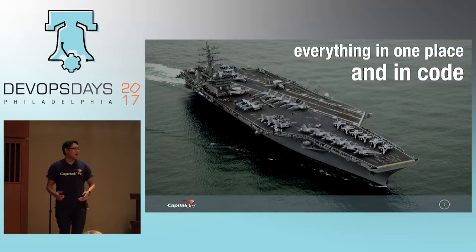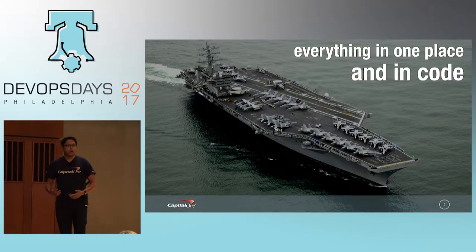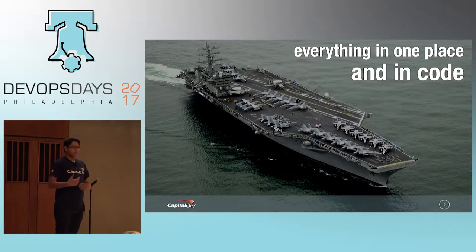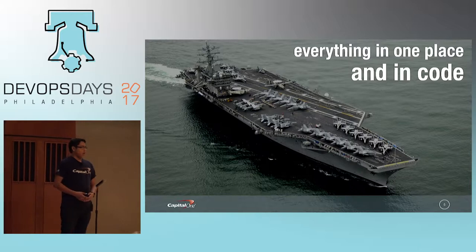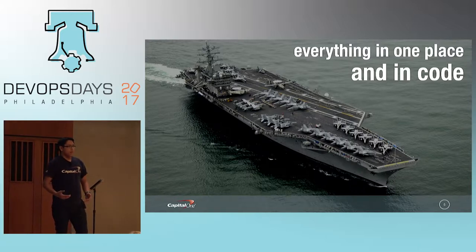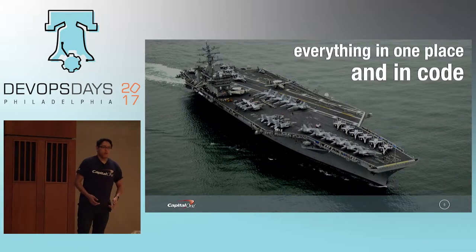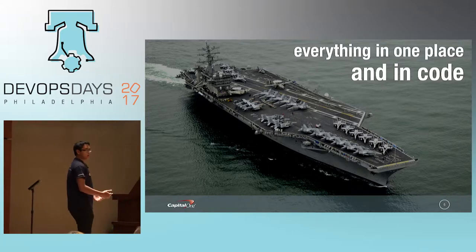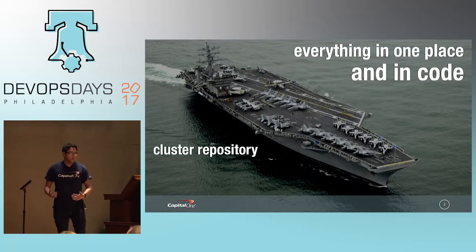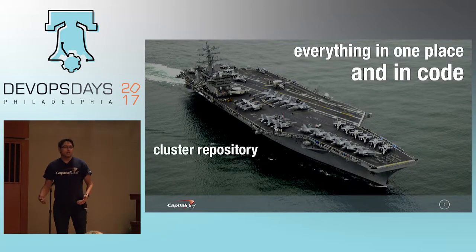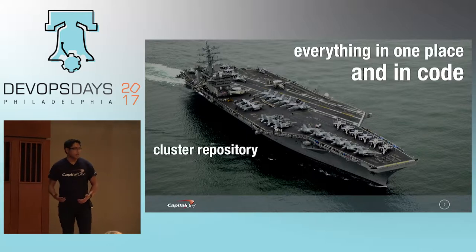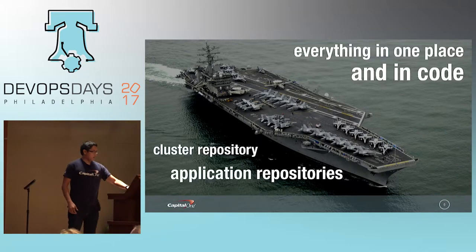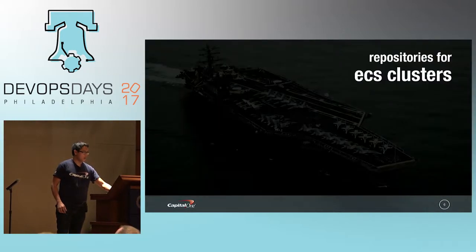Before I start talking about our pipelines, I wanted to talk a little bit about how we organize our code bases to support those pipelines. The first tenet is everything in code and everything in one place — meaning all of your infrastructure, all of your application code, all of your tests go into one repository. We have two types of repositories: cluster repositories, which handle the infrastructure and pipelines for our ECS clusters, and application repositories.